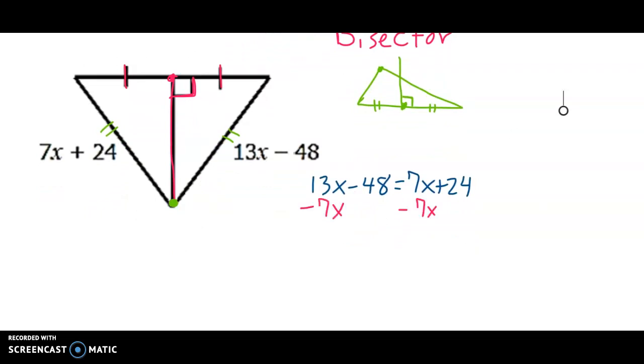So we have 24 on the right, 13 minus 7 is 6x. We're going to add 48 to both sides to get rid of the minus, you add. So 6x equals 72, and divide by 6, and we get that x is 12.